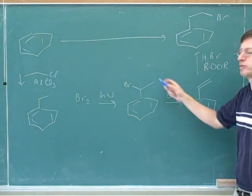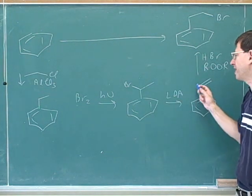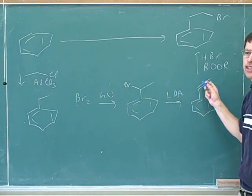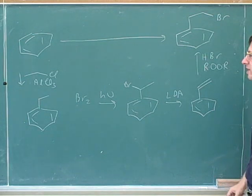You would say: I need to shift my functional groups between two adjacent carbons. Well, maybe forming a pi bond and then adding to it is going to be the way to deal with that.